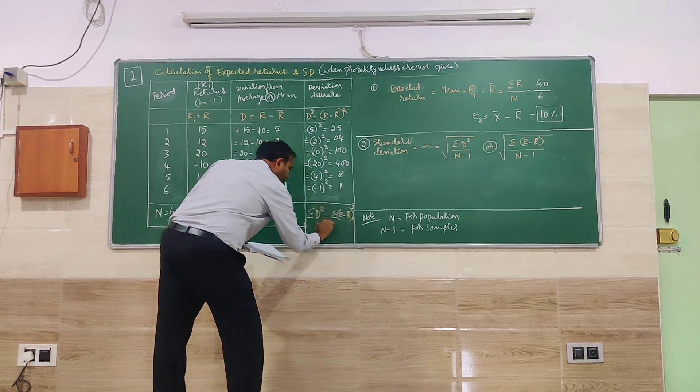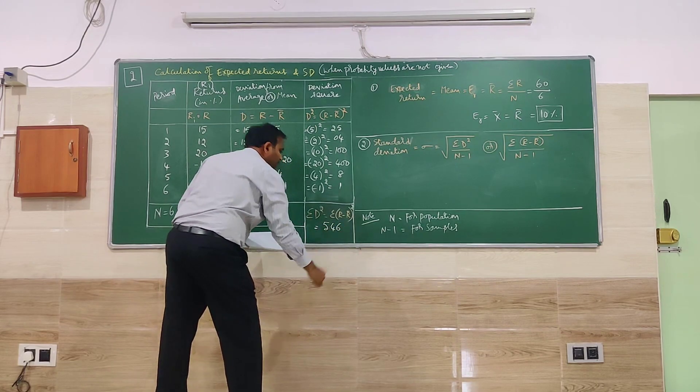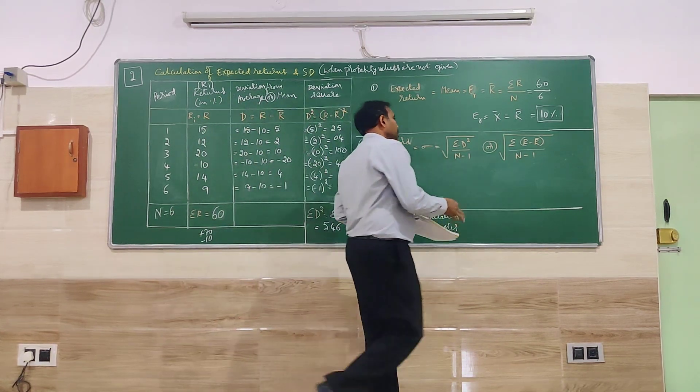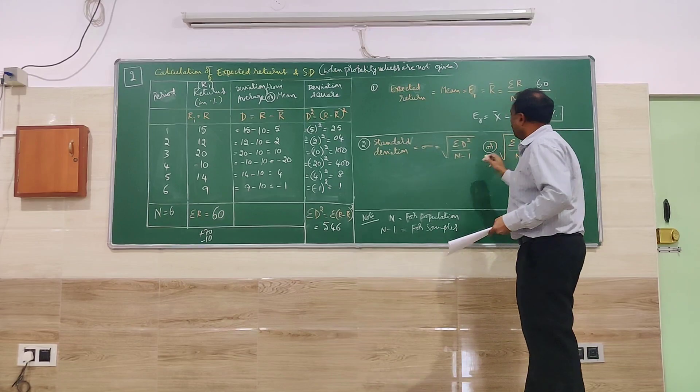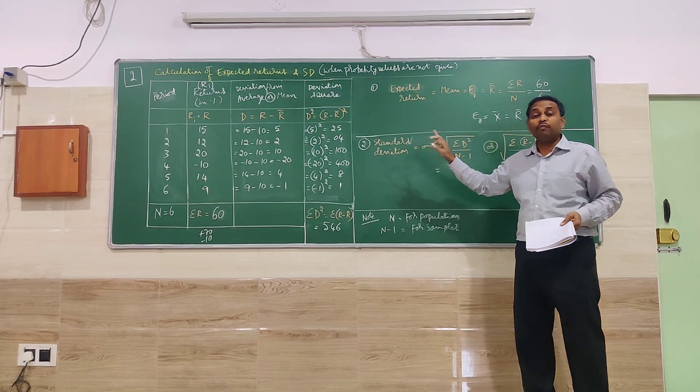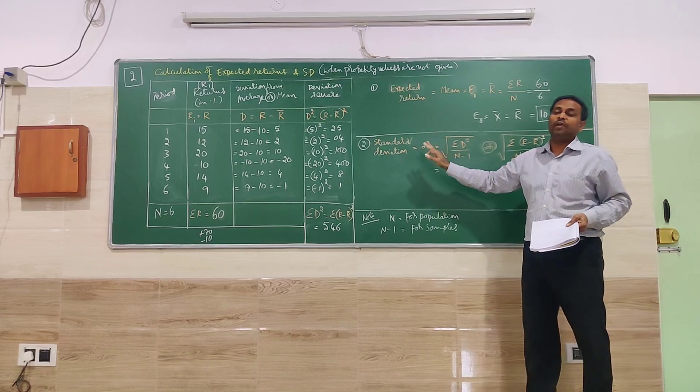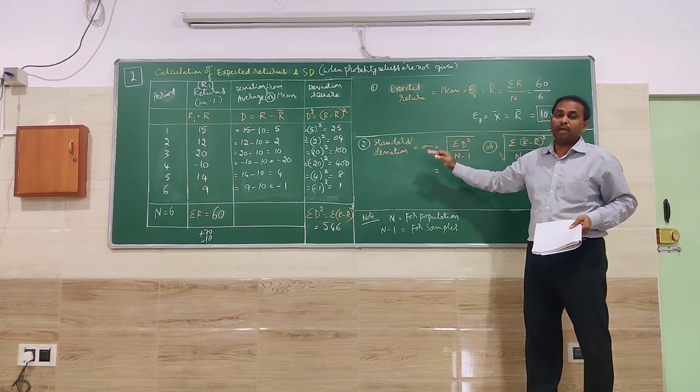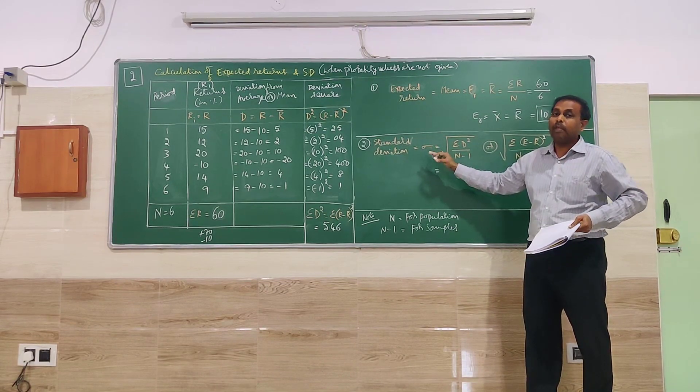One is for D square. Total of D square is summation D square. For another formula I have given R minus R bar, summation R minus R bar whole square. So that is going to be the one here. So total when you do, all are in plus values itself. You are going to find 546. So here in this problem,